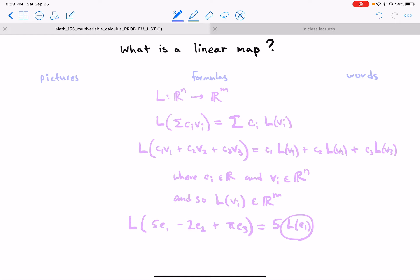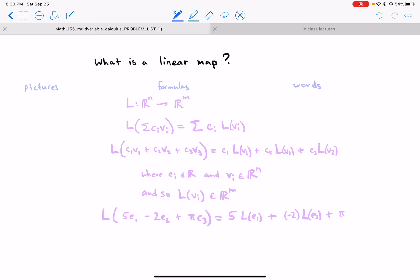five times the vector L of E1. Whatever this is, we need to figure out what that vector is, and for that we need actually a formula for L which we haven't written down yet. So, like, for example—well no, we'll write some down later. So plus, well now I have to take minus 2 of the vector L of E2 plus π times the vector L of E3.